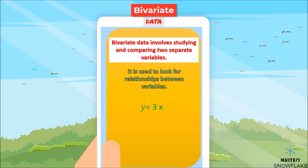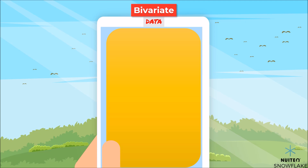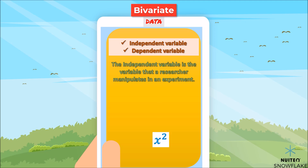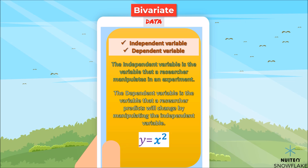A causal link between two variables is typically found by determining if changes in one variable are caused by changes in another. We have two basic types of variables: independent variables and dependent variables. The independent variable is the variable that a researcher manipulates in an experiment. The researcher predicts that changing the independent variable causes a meaningful change in another variable. The dependent variable is the variable that a researcher predicts will change by manipulating the independent variable. The important thing to note is that the researcher does not directly change this variable — it is changed or controlled by an outside factor, often the independent variable.